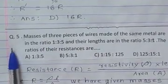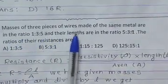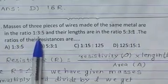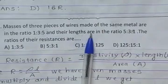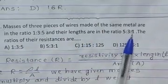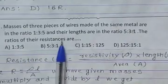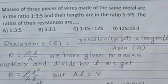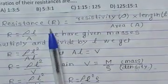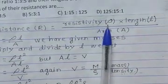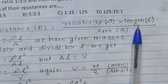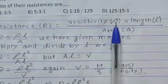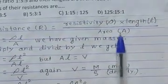Question number 5: Masses of 3 pieces of wires made of the same metal are in the ratio 1:3:5 and their lengths are in the ratio 5:3:1. What is the ratio of their resistances? Resistance R is equal to resistivity ρ into length L upon area A.